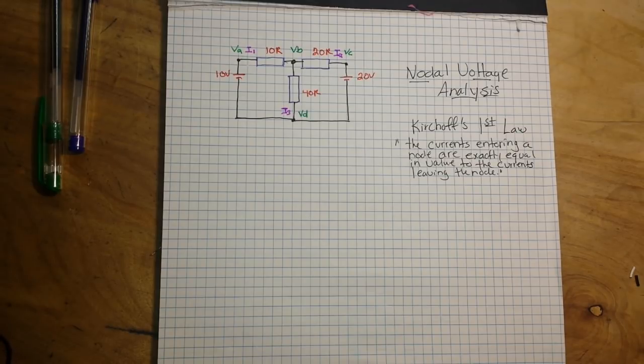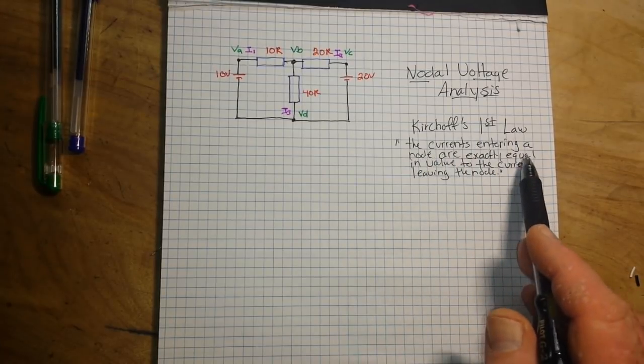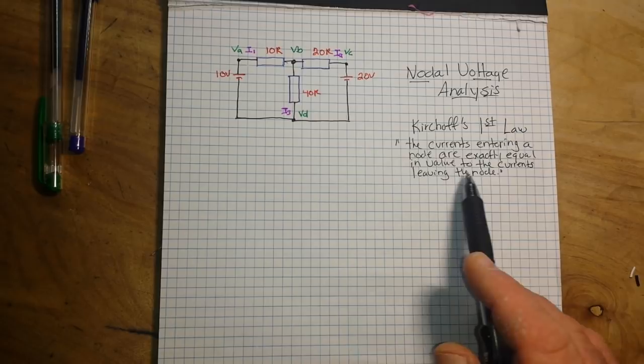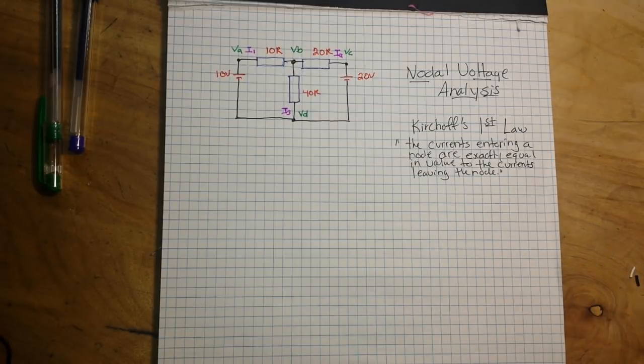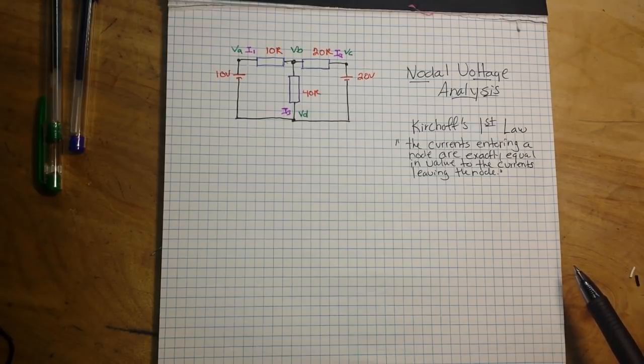They're basically both what are called matrix analysis. A nodal analysis uses the nodal equations of Kirchhoff's first law to find the voltage potential. So you do need to know Kirchhoff's first law, which says the currents entering a node are exactly equal in value to the currents leaving a node. Once we have that information, we know that we can add together the nodal voltages and the net result will be zero.